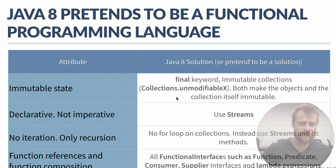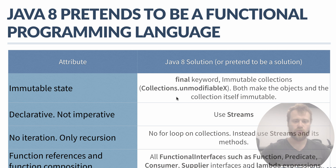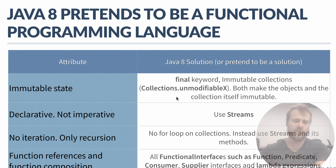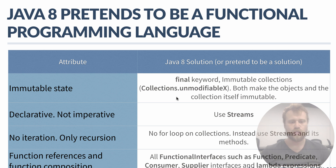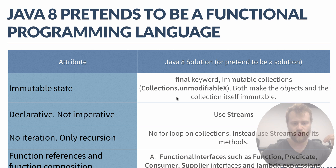Functional programming is declarative — you just say 'filter this collection' or 'convert this collection to an ArrayList,' without telling the computer how to do it. For this, Java 8 uses streams. There is no iteration in functional programming, no for loops. Collections are transformed into streams, and stream methods help us use recursion for iterating over all the items.